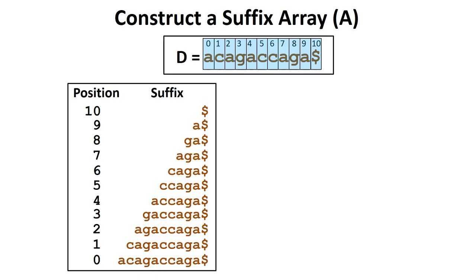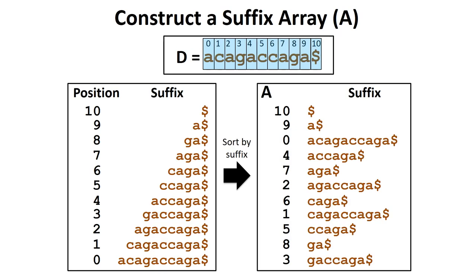We then sort these suffixes alphabetically while also keeping track of the position of each suffix. We can convert a suffix array into a suffix tree by merging the common suffixes in the list of sorted suffixes.